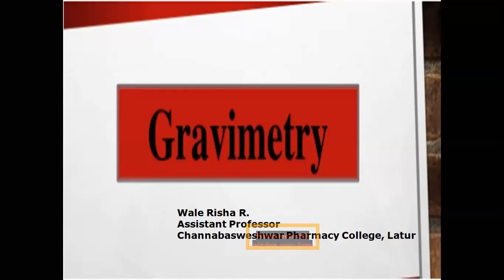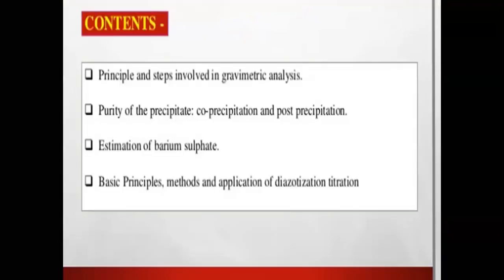Today we are going to start with the second major method — gravimetry. Gravimetry is a modified form of precipitation-type titration. It is derived from the Greek words 'gravi' meaning weighing and 'metry' meaning measurement. From the weight measurement of a compound, we can find out the concentration of the analyte. Points to be covered under gravimetric analysis include: the principle and various steps involved, purity of precipitate, co-precipitation, post-precipitation, and the estimation of barium sulfate by gravimetric analysis.